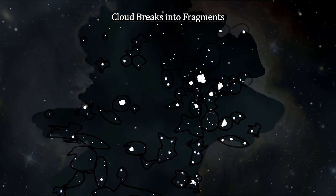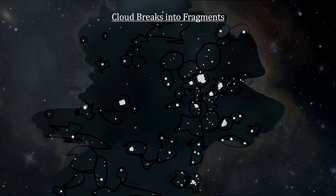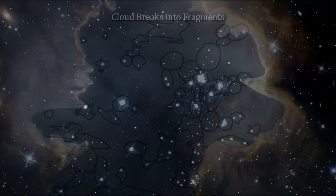Each of these fragments continue to collapse over a 20 million year period. They form planet-sized objects, brown dwarfs, and stars of all masses. In this way, collapsing giant molecular clouds create star clusters.